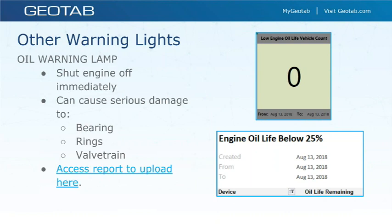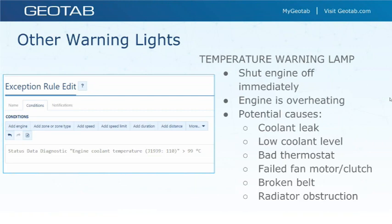The check engine light is not the only warning symbol on the instrument cluster. There is an oil warning lamp that identifies issues with your oil level — Geotab offers a report in the marketplace that identifies oil levels and can send an email when your oil level is low. There is also a temperature warning lamp that identifies issues with abnormal operating temperatures within the cooling system. If this light activates while you're driving, it indicates the engine is hot, possibly due to a low coolant condition. Geotab has the ability to write rules to monitor temperature and notify you of a potential issue before it reaches a critical level.